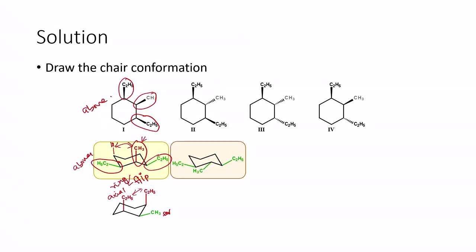Moving to compound two, one ethyl group is equatorial, the other ethyl group is equatorial, and the methyl group is also equatorial — all three groups are in the equatorial position. This compound will have no diaxial interactions and is the most stable. When we do the ring flip, all substituents become axial, which is quite unstable. Therefore, this molecule prefers to stay in the all-equatorial orientation.